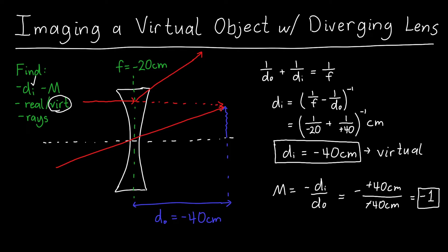This ray is diverging away from the first ray — they're never going to meet, which is expected since the image is virtual. All I have to do is trace back where this ray appears to come from. Tracing it back, the two rays meet at the location of the virtual image. It looks like the angles are roughly correct: the image distance is about −40 cm, the same distance as the object.